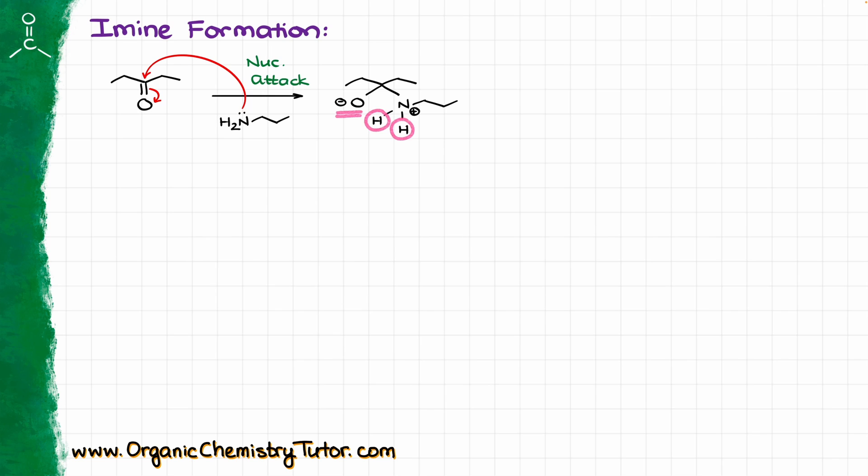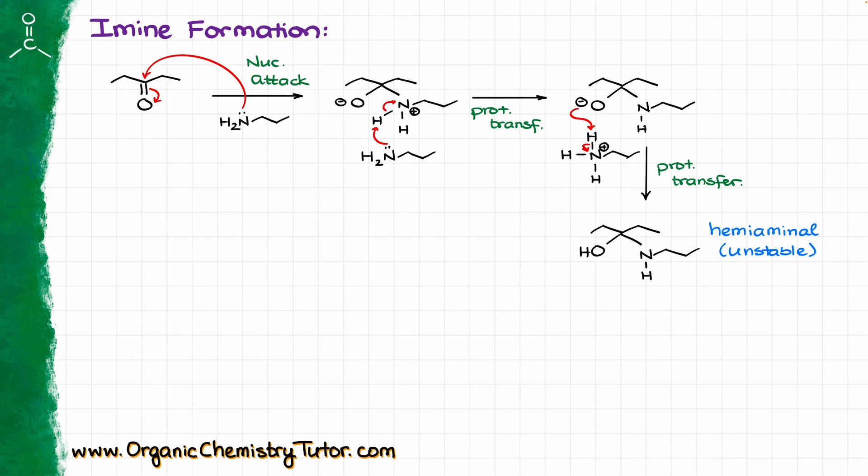So, once this nucleophilic attack happens, we are going to end up with an intermediate, and now we need to get one of these hydrogens off our nitrogen, and we need to protonate our oxygen here. Typically, we are going to show that in two steps. First, some sort of a chaperone, maybe another molecule of my amine or something else, is going to come by, pull that proton off, gives me the intermediate, which then gets protonated, and gives me my halfway point intermediate, which is going to be the hemi-aminol.